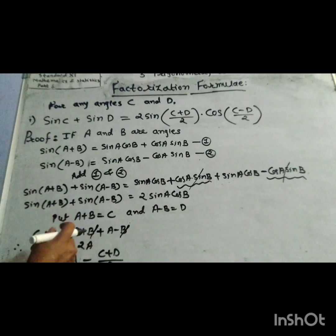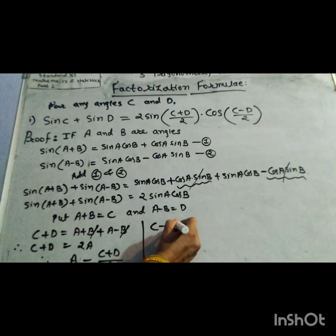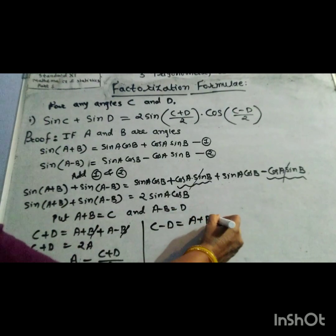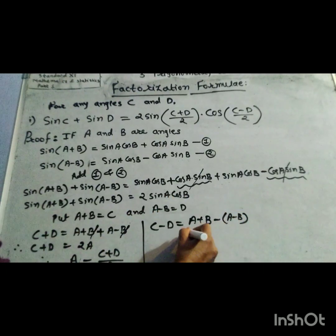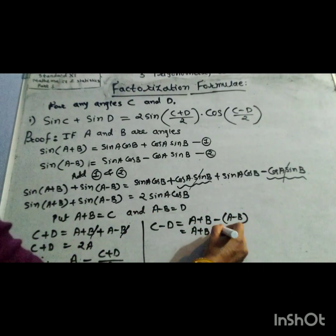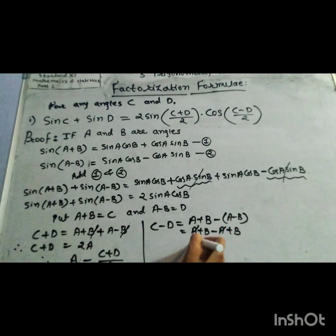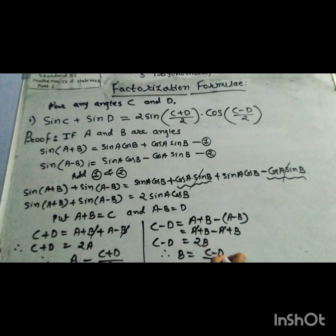यहाँ minus करेचे: C minus D equal to A plus B minus A minus B. Negative negative becomes positive, plus A minus A equal to 0, B plus B equal to 2B. Therefore C minus D equal to 2B, so B equal to C minus D divided by 2.